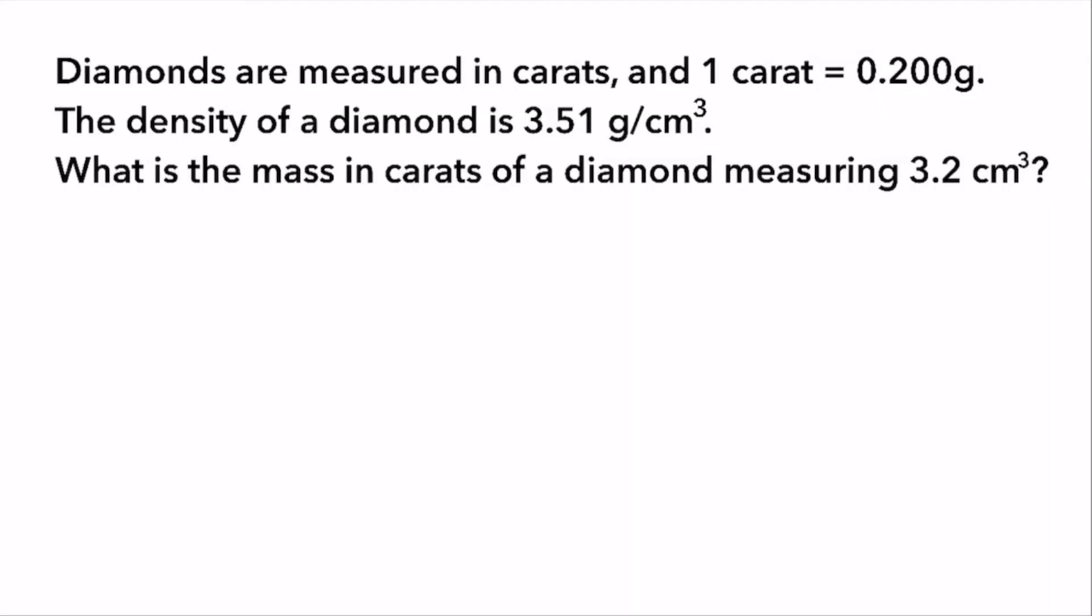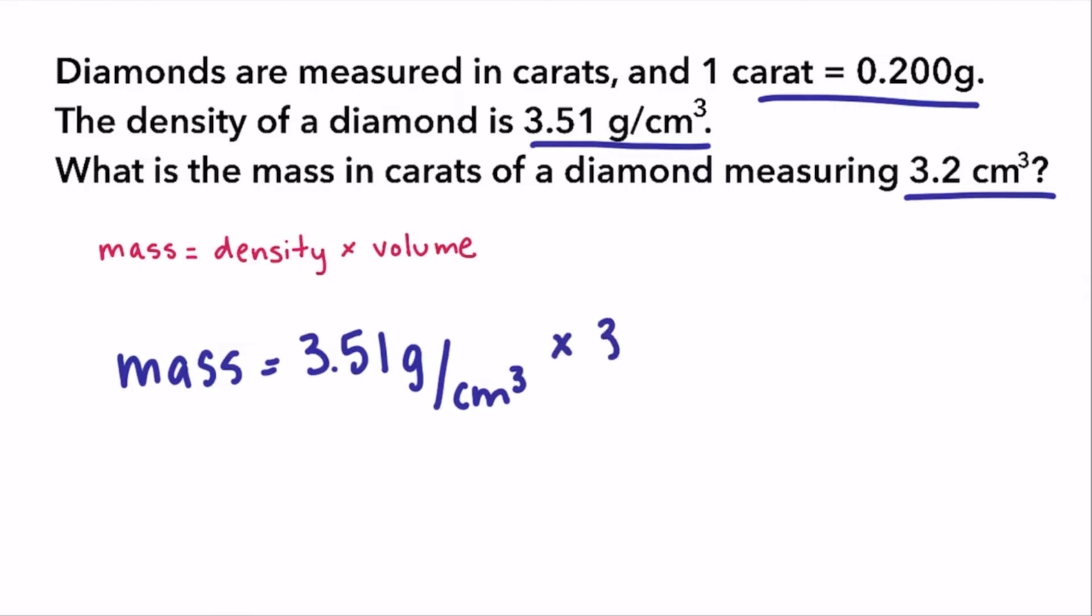Diamonds are measured in carats and one carat is equal to 0.200 grams. The density of a diamond is 3.51 grams per cubic centimeter. What is the mass in carats of a diamond measuring 3.2 cubic centimeters? Using our rearranged formula, first we're going to substitute the values for volume and density to solve for the mass in grams. Then we're going to convert the grams into carats using our conversion factor.